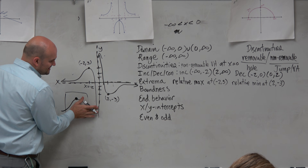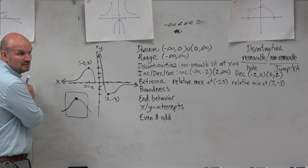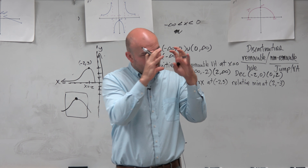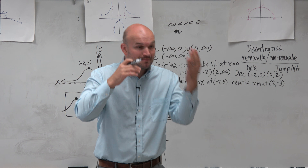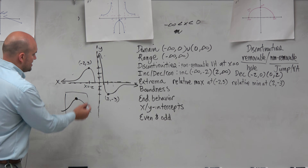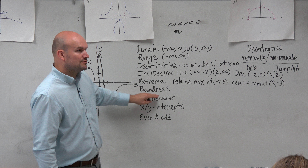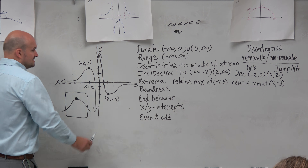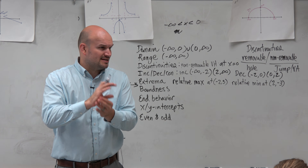Extrema is basically the highs and lows of the graph — is there a point that is a maximum or minimum? You can see this graph continues going up and down, so there's never a point that's always the highest. However, if you took a camera and zoomed in on one part of the graph, all you'd see is that portion. Is there now a maximum point? Yes — but it's relative to what you're looking at. If you zoom all the way out, it's not an absolute maximum.